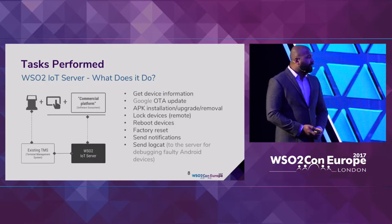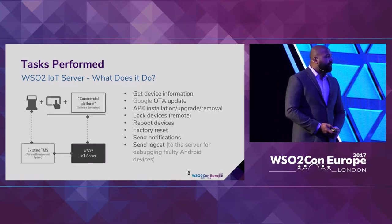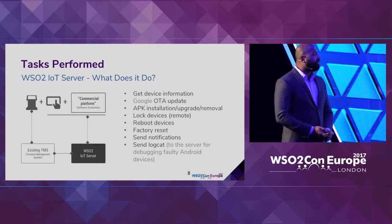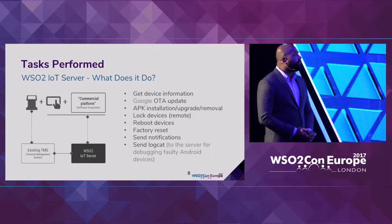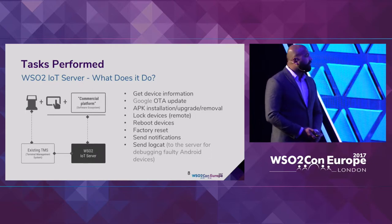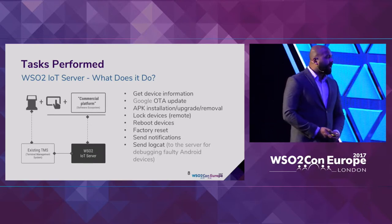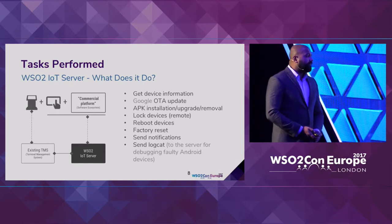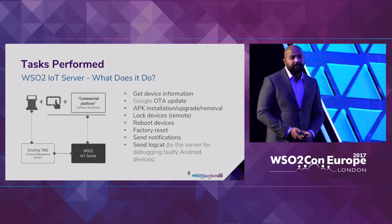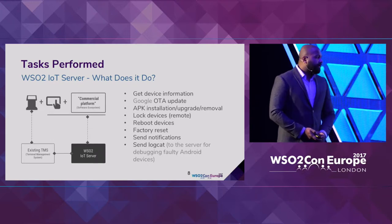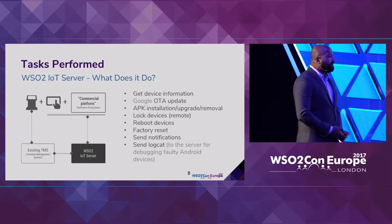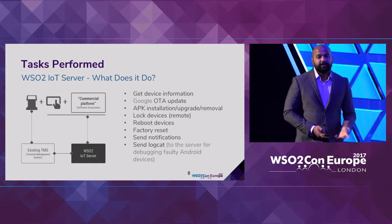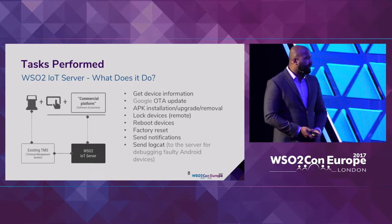The tasks performed by WSO2 IoT server include fetching information relevant to each device, pushing Google over-the-air updates, and performing remote APK installations and updates. They can lock devices, reboot devices, or factory reset faulty ones. They can send notifications and send logcat instances — if a faulty device is detected, they can obtain logs for centralized debugging.